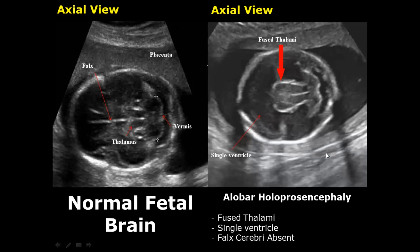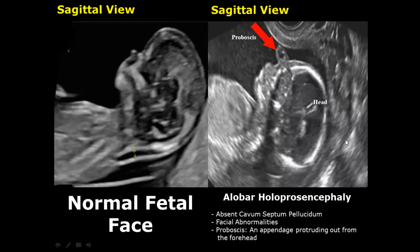Holoprosencephaly is a brain disease with three main types. The first is alobar holoprosencephaly, in which the thalami are fused — you can notice here the thalami are fused, whereas in the normal image they are on either side of the falx cerebri. There is a single monoventricular cavity, and the falx cerebri is also absent. This form is associated with facial abnormalities, one of which is proboscis — an appendage protruding out from the forehead, as shown in this sagittal image.